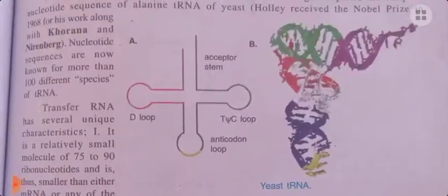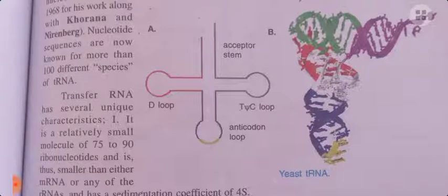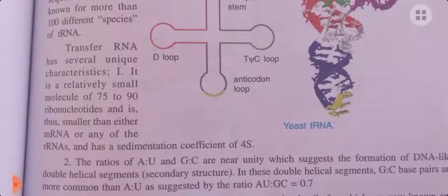We can see the loop-like structures: the D-loop, the anticodon loop, and the T-psi-C loop (pseudouridine C loop). These loops occur due to the presence of unusual bases. In the D-loop, there is dihydrouridine — a modified base where no base pairing occurs, causing loop formation. In the T-psi-C loop, there is pseudouridine — another modified base — where complementary base pairing does not occur with the opposite base, resulting in loop formation.